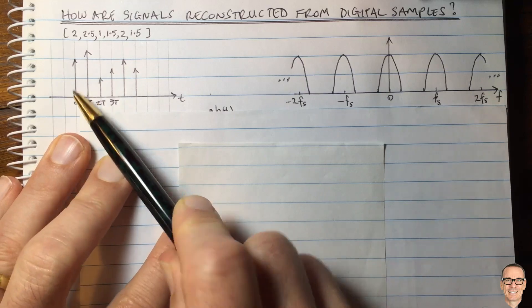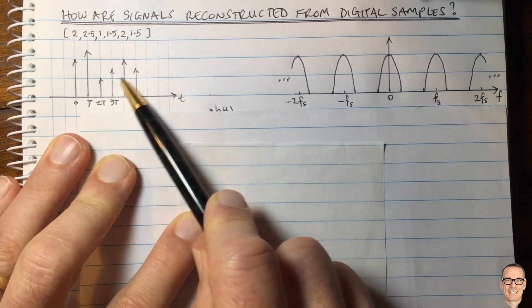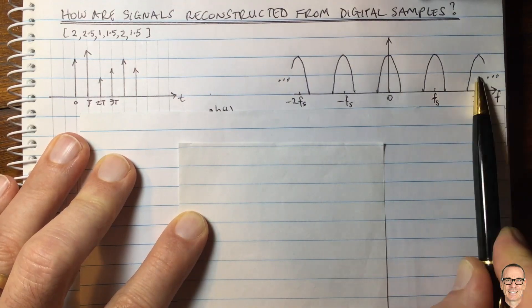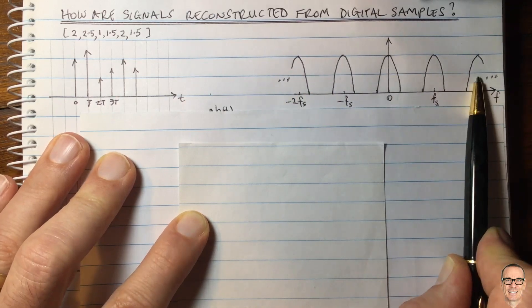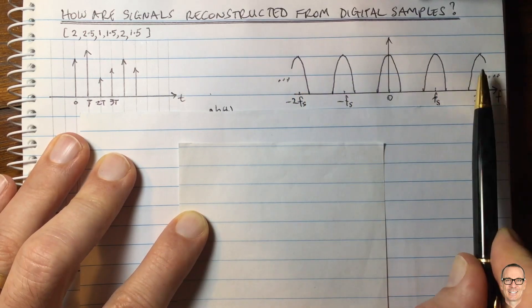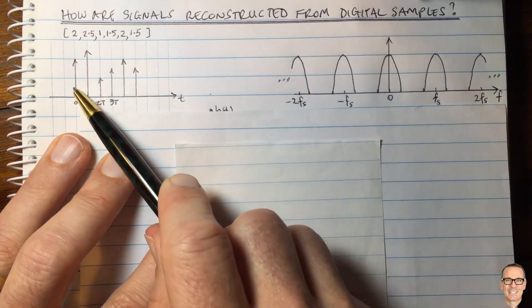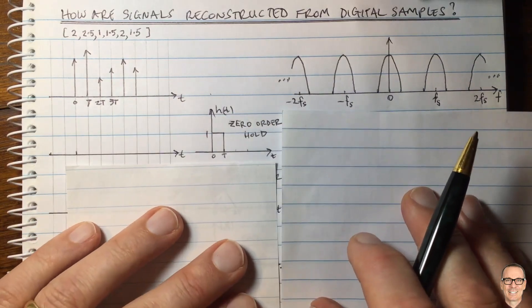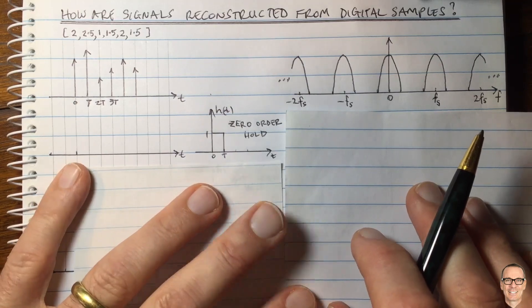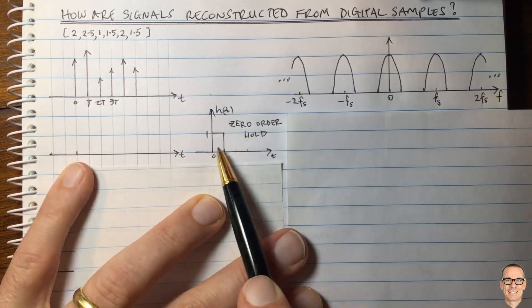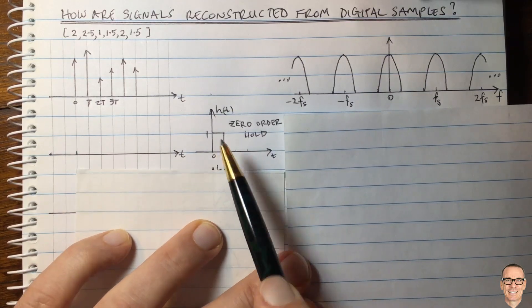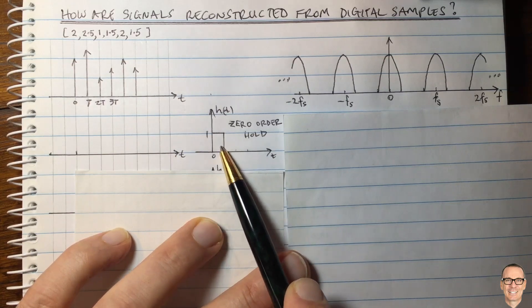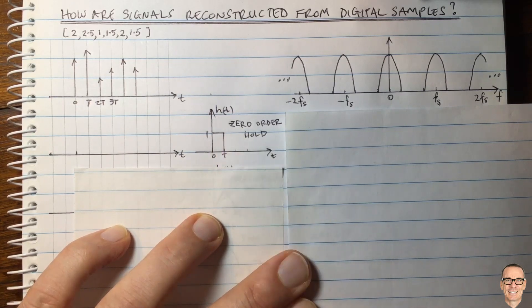We can think in the time domain about how to turn this back into a continuous waveform — this is the reconstruction. Or in the frequency domain, we think about how to get rid of these aliased copies, since the original waveform did not have them. The first thing we might think about doing is using what's called a zero-order hold filter. If we put this impulse train as an input into a filter with this impulse response, what would we get out?